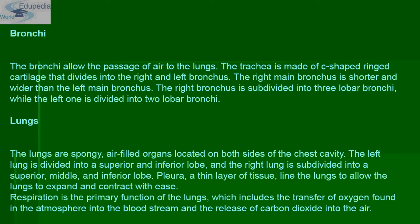We have one pair of lungs. The lungs are spongy, air-filled organs located on both sides of the chest cavity. The left lung is divided into superior and inferior lobes, and the right lung is subdivided into superior, middle, and inferior lobes. Pleura is a thin layer of tissue that lines the lung to allow the lungs to expand and contract with ease. The primary role of the lungs is respiration — the transfer of oxygen from the atmosphere into the bloodstream and the release of carbon dioxide into the air.